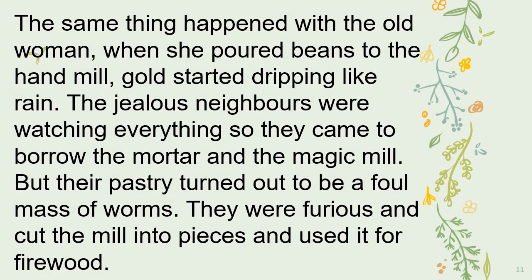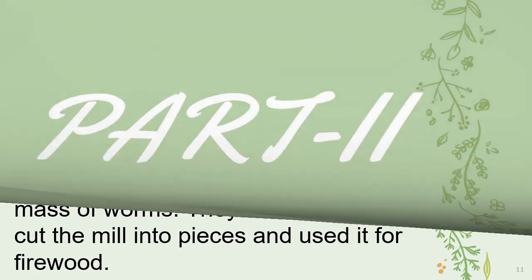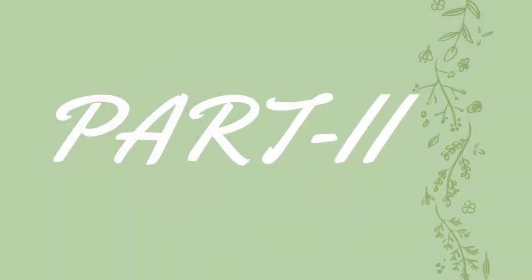The same thing happened with the old woman when she poured beans into the hand mill — gold started dripping like rain. The jealous neighbors were watching everything, so they came to borrow the mortar and the magic mill. But their pastry turned out to be a foul mass of worms. Furious, they cut the mill into pieces and used it for firewood. This was the summary of part 1 that we read in lecture number 1.